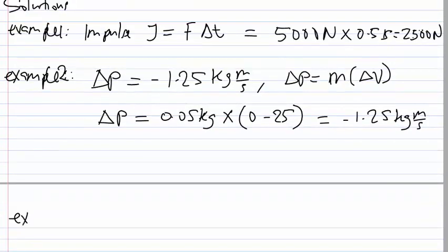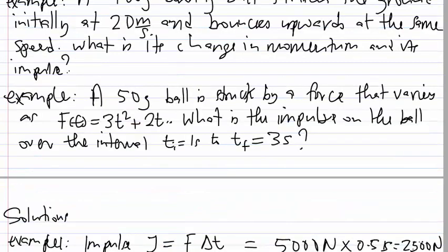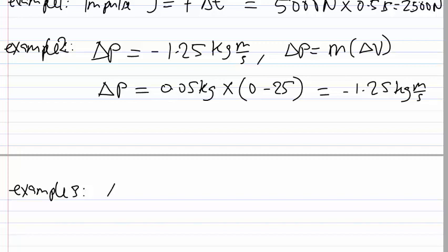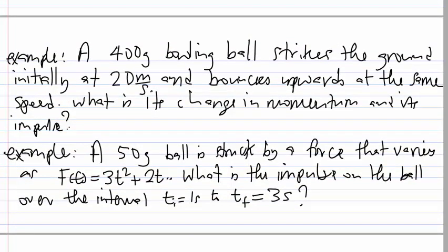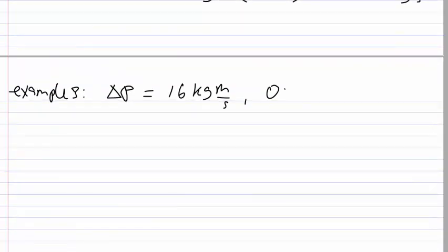Example 3 involves change in momentum and impulse. A 400-gram bowling ball strikes the ground at 20 m/s and bounces upward at the same speed. The impulse-momentum theorem tells us that change in momentum equals impulse, so once you calculate the change in momentum you also have the impulse.